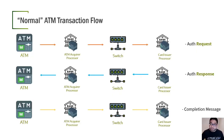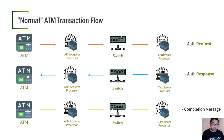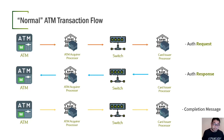Before that, we need to understand a normal ATM transaction flow. The ATM will send an authorization request through the ATM acquirer processor, which redirects to the switch, and the switch to the card issuer processor. The card issuer processor will answer with an authorization response sent back to the ATM. If the ATM sees that everything is all right and can dispense the money, it will do so, and then send a completion message to the card issuer processor.